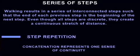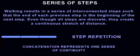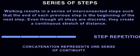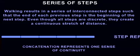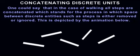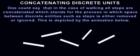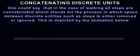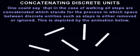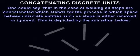Walking results in a series of interconnected steps such that the end of each previous step is the beginning of the next step. Even though all steps are discrete, they create a continuous stretch of distance. One could say that in the case of walking, all steps are concatenated, which stands for the process in which space between discrete entities is either removed or ignored.